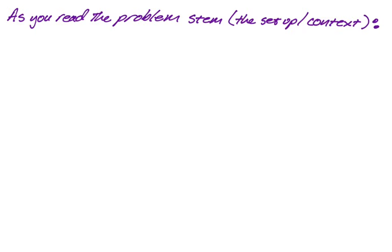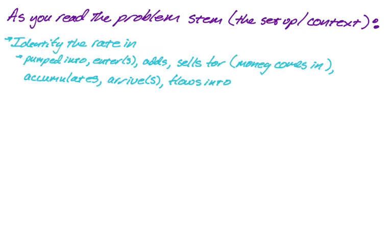So let's talk about what these problems will look like. As you read the problem, you really have to figure out what's going on before you can dive right in. So what I think you need to do is you need to really know three key things. The first one is you have to identify what the rate in is. Like how fast is stuff being added to this pile that you have? And the pile might be an oil spill, it might be gravel. They frequently are putting water in tanks. That's the most common thing. So here are the words that they use to identify the rate in typically. So pumped into, enters, adds, sells for, which is really just money coming in. That's your profit. Accumulates, arrive or arrives, and then flows into.